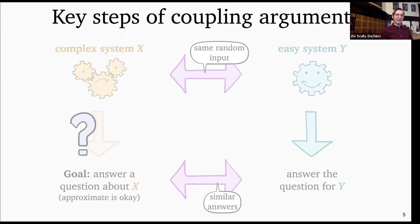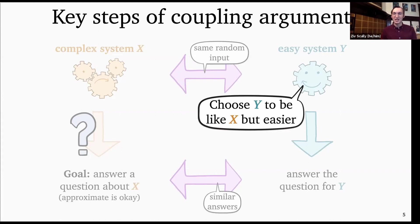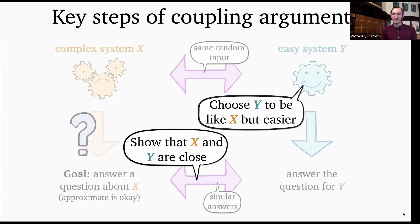There are two main steps of most coupling arguments that form the basis of our classification. The first key step is choosing your easy system Y — there's an art to this, because you have to choose it to be similar enough to X that you reasonably approximate X, but easy enough that you can solve it. The second question is showing that X and Y are close. There are a couple of different ways in which two systems might be shown to be close, and what 'close' means will be another way we classify couplings.